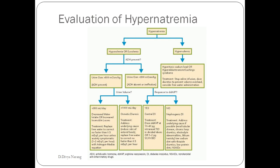Another etiology of hypernatremia is osmotic diuresis, which occurs when an osmolar load passes through the kidney, drawing out large amounts of water into the urine. This commonly results from poorly controlled diabetes mellitus and its associated glycosuria — the more osmotic load/glucose present, the more water is attracted, resulting in hypernatremia. IV mannitol and retained uremic toxins in recovering renal failure can also result in osmotic diuresis.